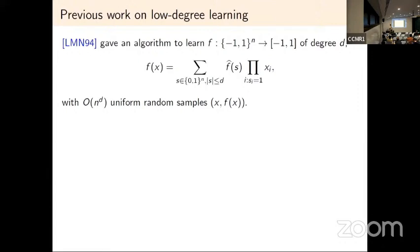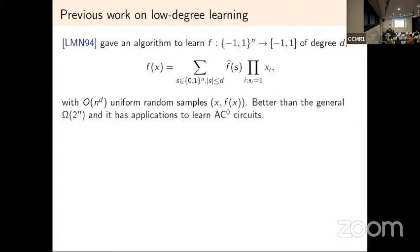Let me be more precise. Having degree d means that when you look at the function as a multilinear polynomial and look at its full expansion, this expansion is truncated to those monomials of degree at most d. Random samples means that f(x) is sampled such that x is picked uniformly at random from the Boolean cube. With n to the power d uniform samples, you can learn these functions.